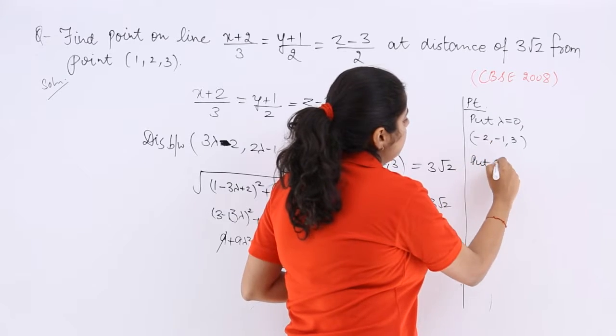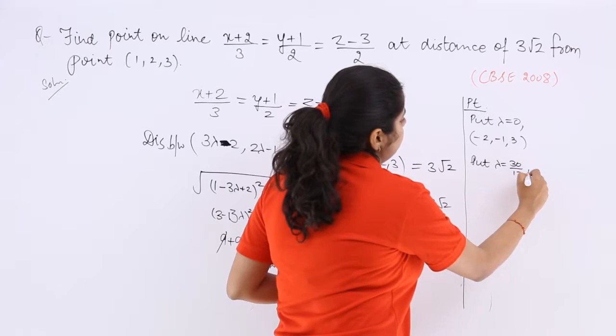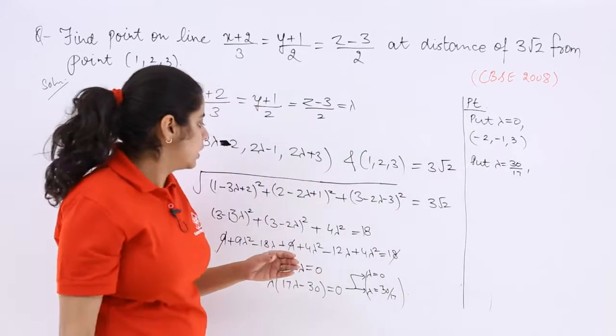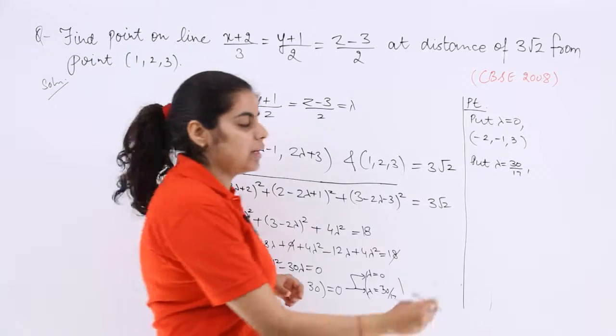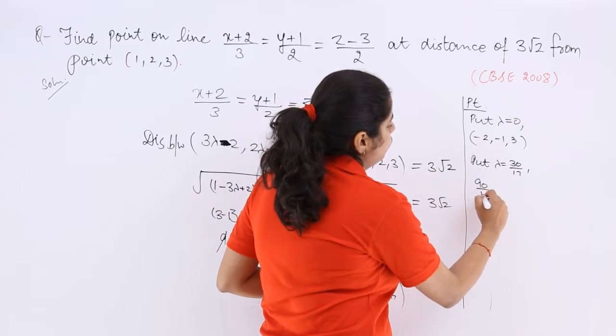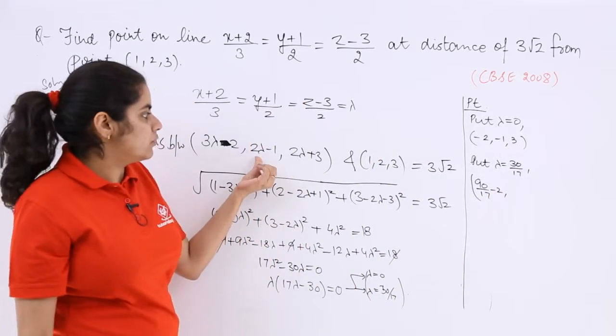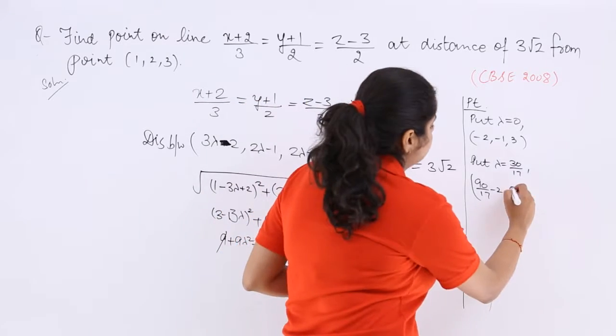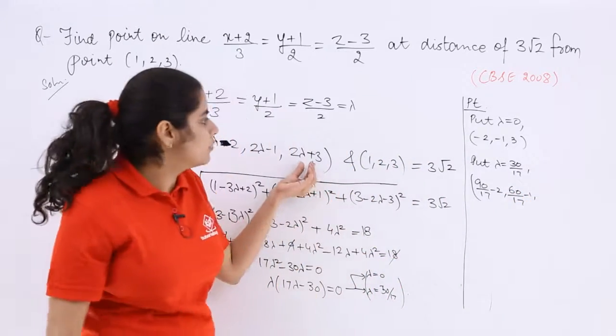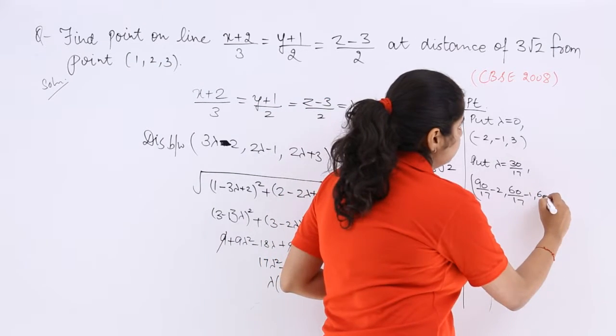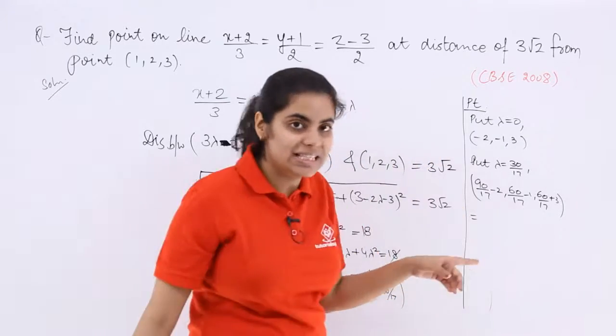The other point where you can put lambda is equal to 30 upon 17 is what? Here you put 30 upon 17. So 3, 30 psi is 90 upon 17 minus 2. Then you have 60 upon 17 minus 1. Then you have 60 upon 17 plus 3.